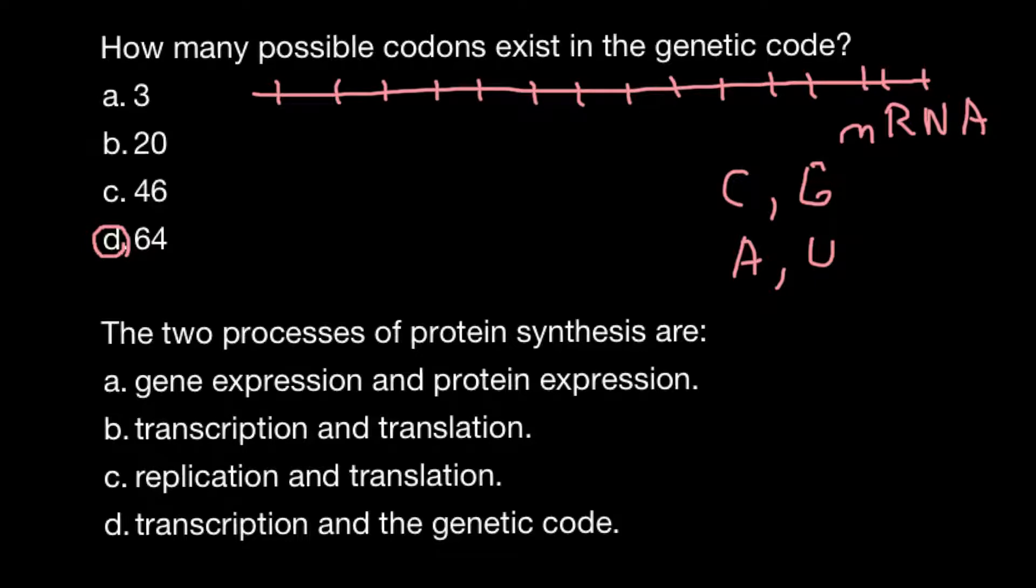So the reading frame would be three nucleotides per codon. As you see, we have position number one, position number two, and position number three within one codon.